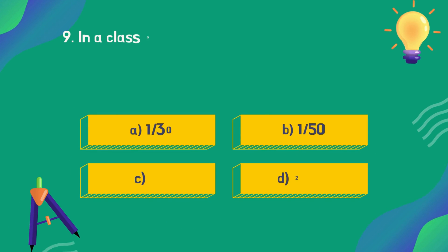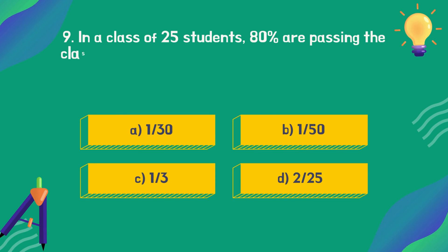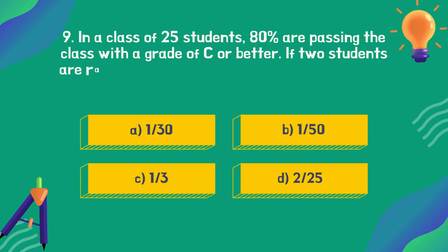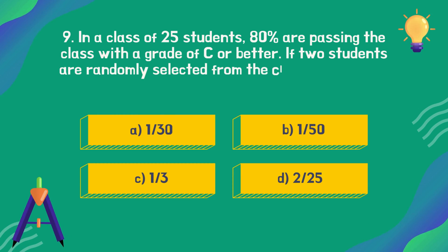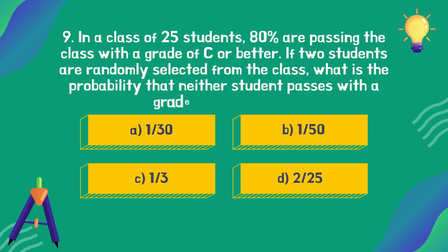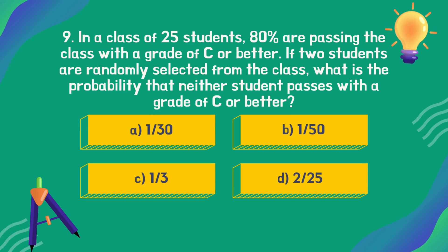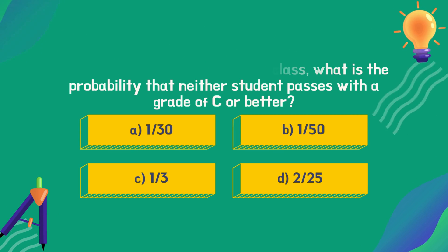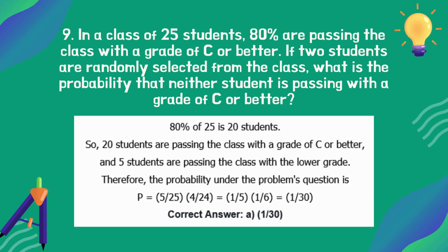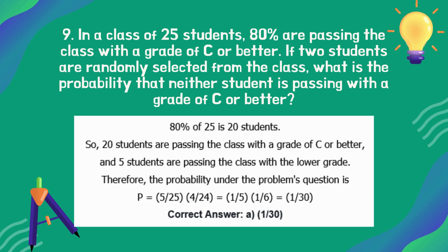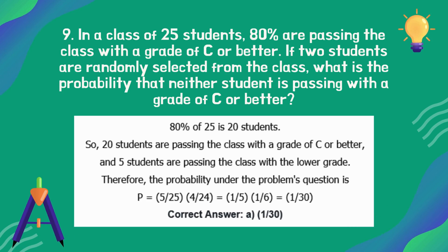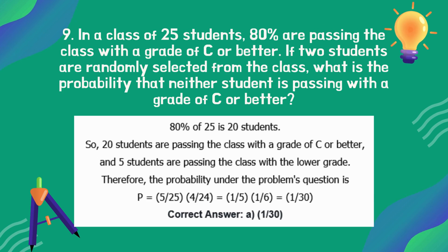In a class of 25 students, 80 percent are passing the class with a grade of C or better. If two students are randomly selected from the class, what is the probability that neither student passes with a grade of C or better? The correct answer is option A: 1/30.